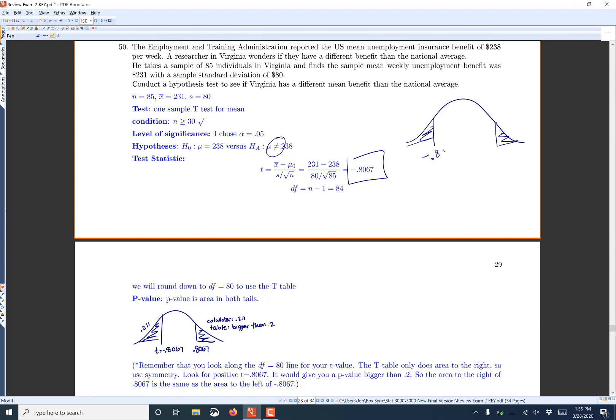So here is negative 0.8067. This would be positive 0.8067 because the t-distribution is always symmetric. So we're looking for the area in both tails.